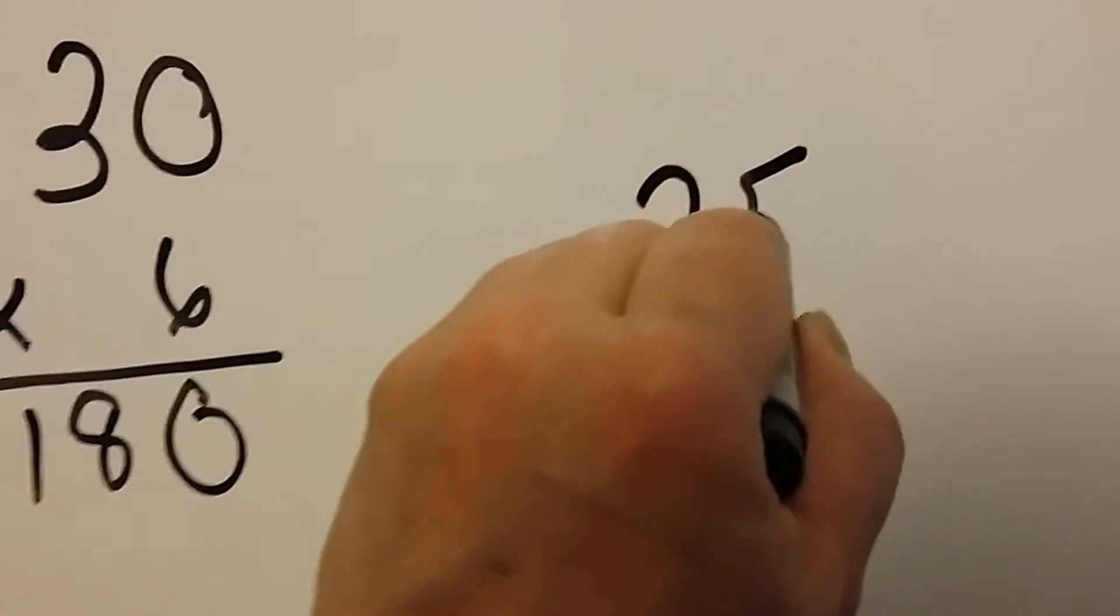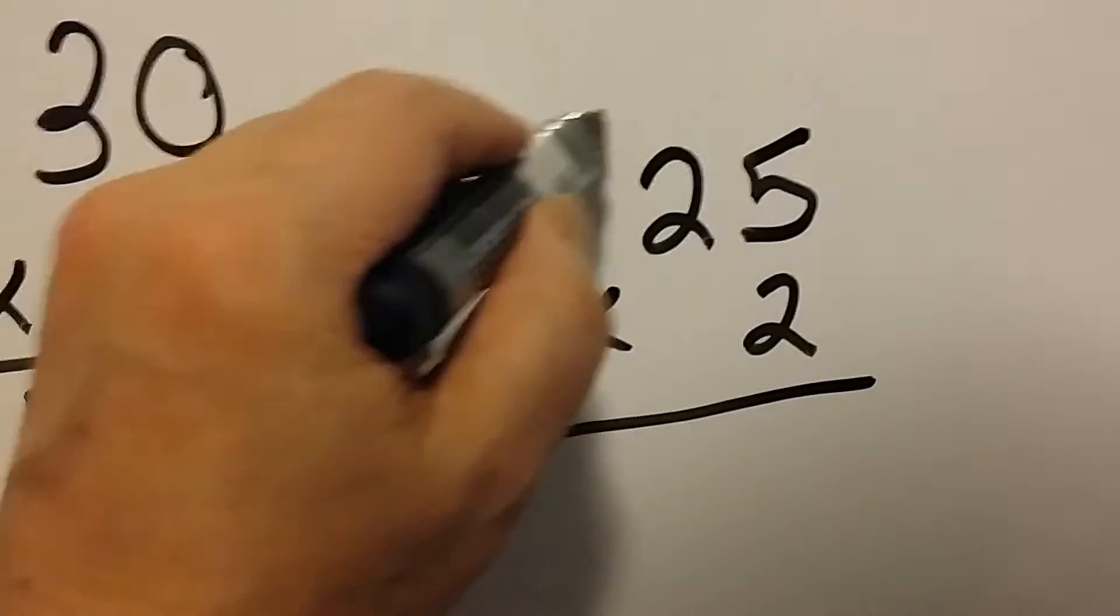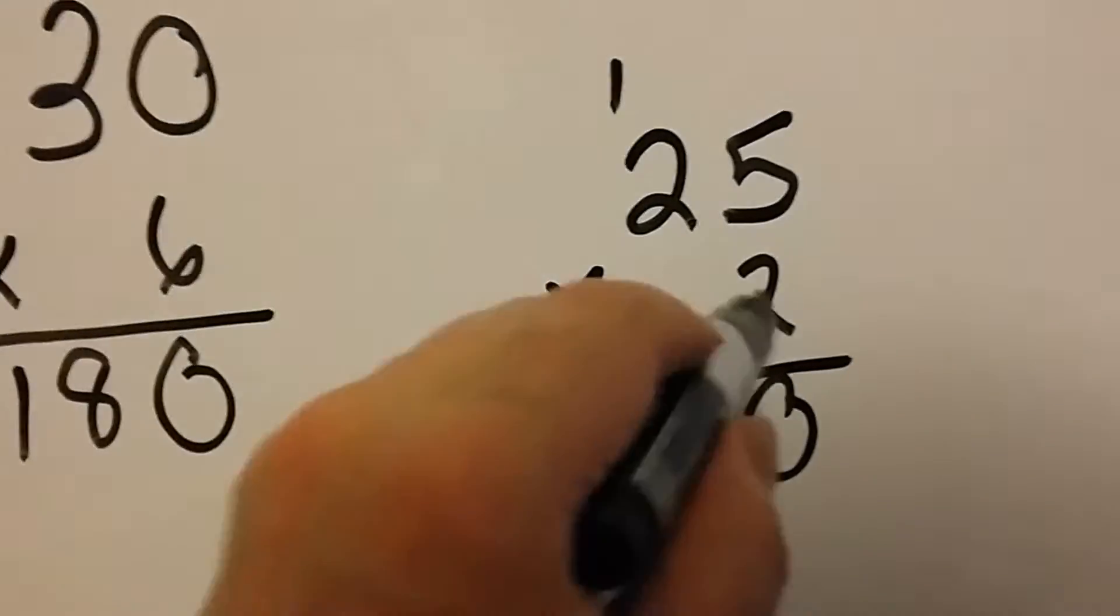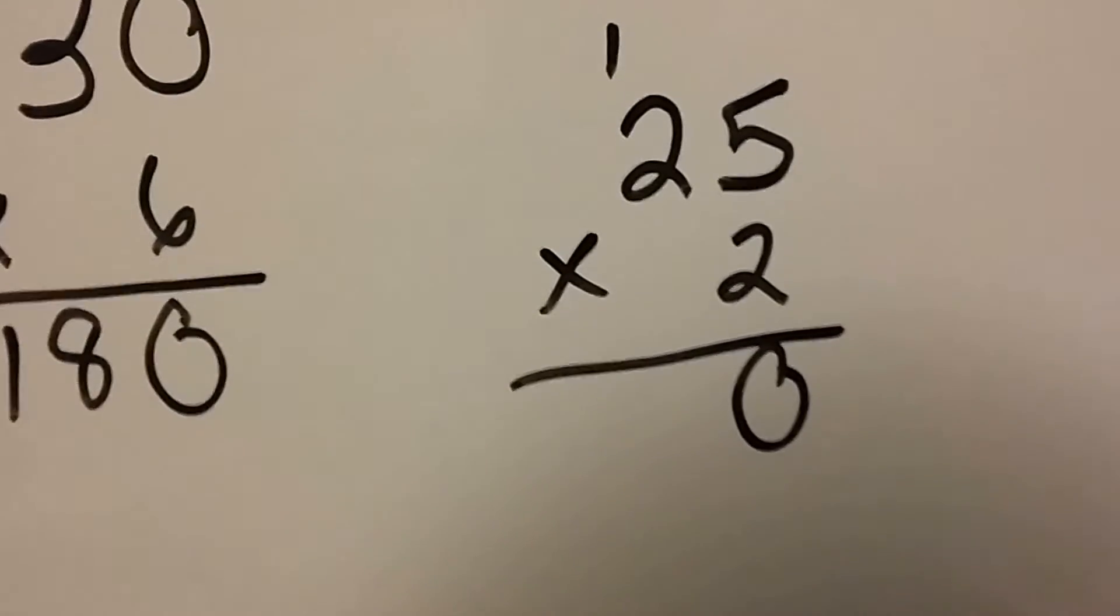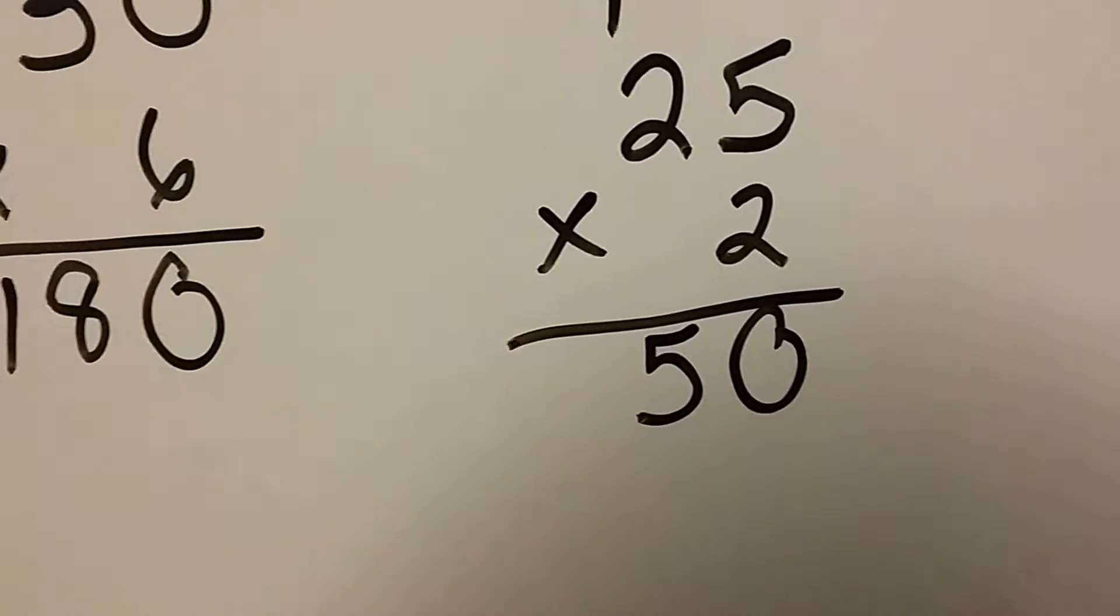It's no different if we had 25 times 2. You would do 2 times 5, which is 10. We can carry the 1 up over here for the 10 and put the 0 down. Then we do 2 times 2 is 4, plus that 1 is 5.